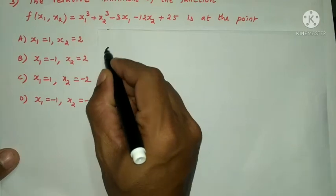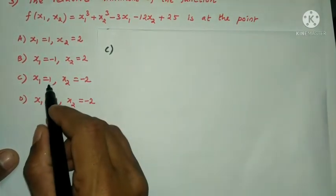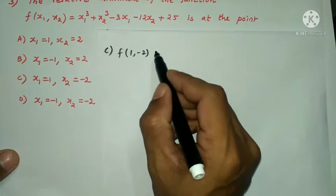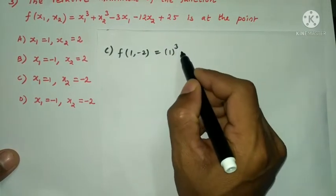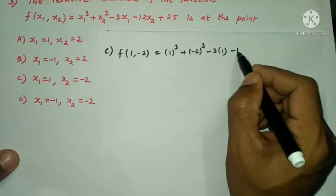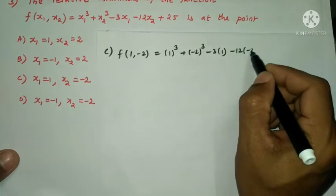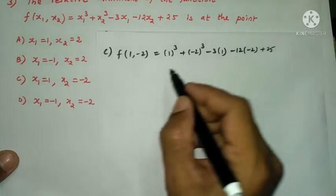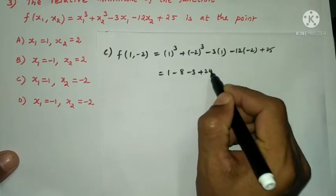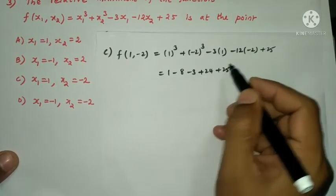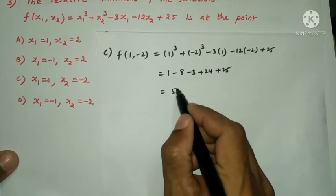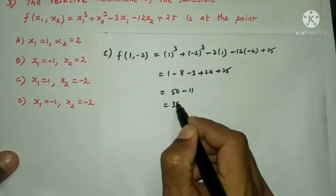Option C: x1=1, x2=-2. f(1,-2) = 1³ + (-2)³ - 3(1) - 12(-2) + 25 = 1 - 8 - 3 + 24 + 25 = 49 + 1 = 50, minus 11 = 39. Option C gives value 39.